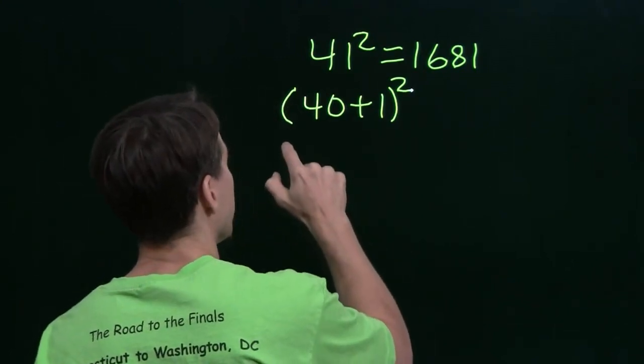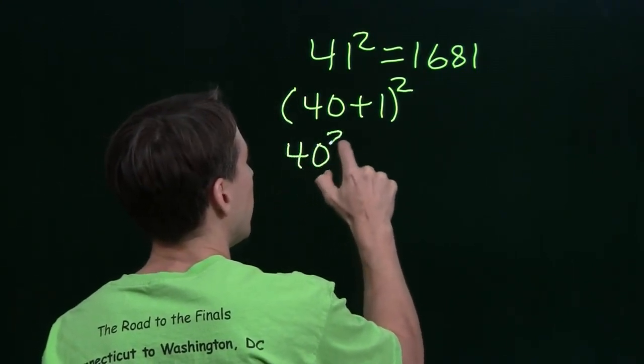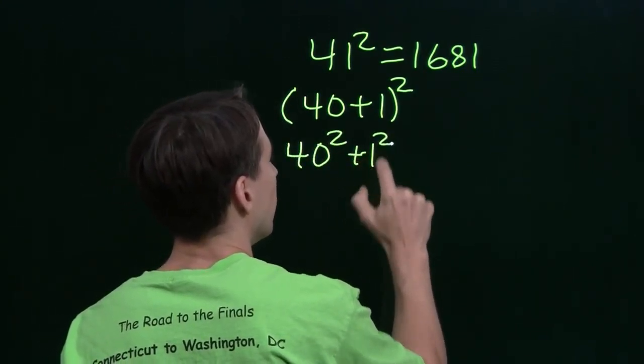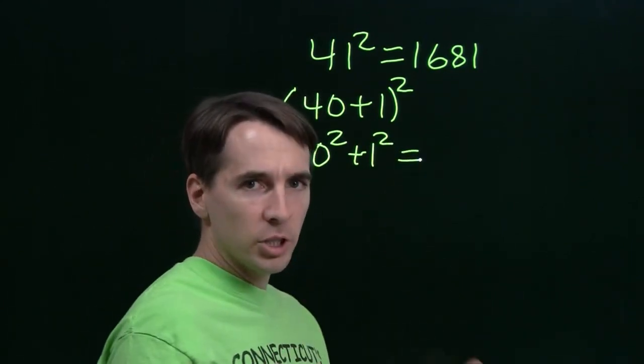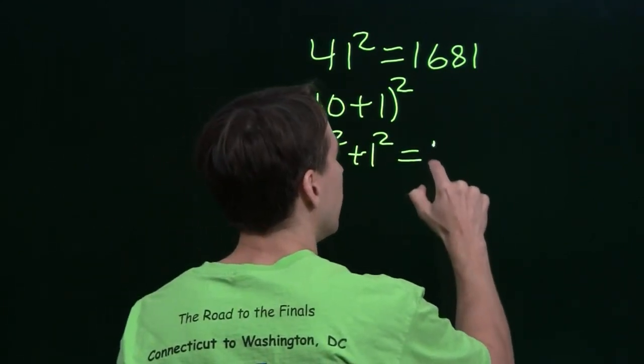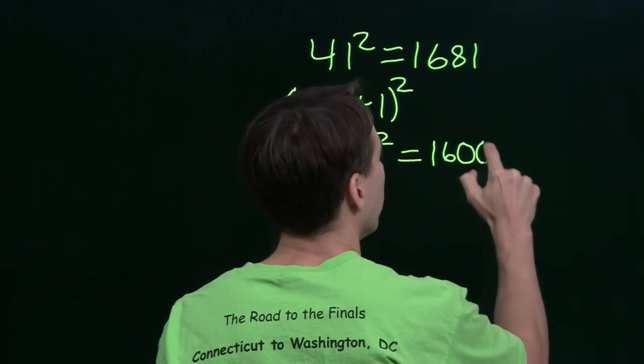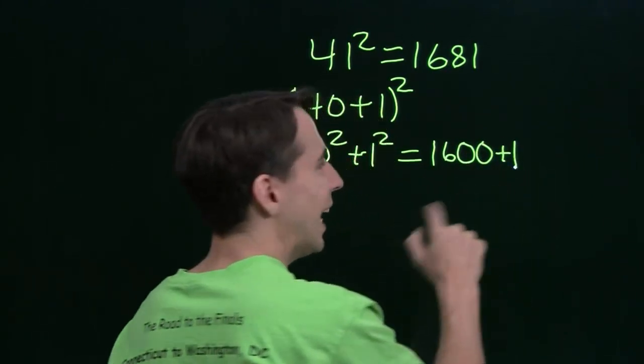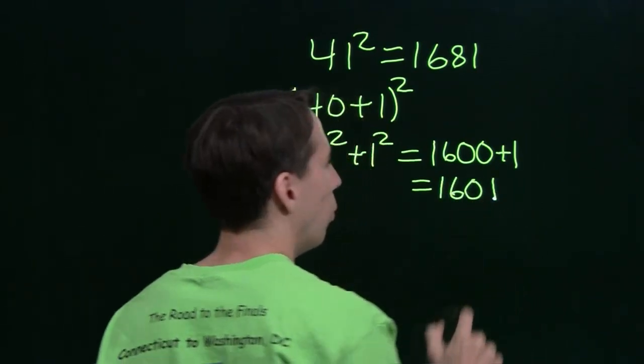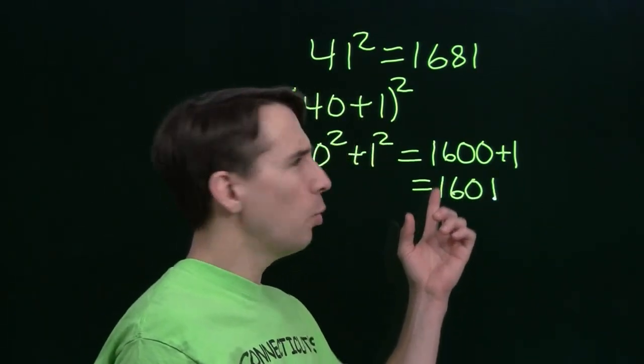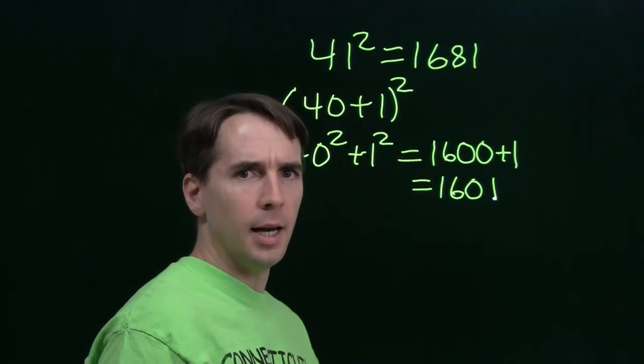Now, I'm guessing some of you tried this. You tried 40 squared plus 1 squared. Let's go ahead and compute this and see what that gives us. 40 squared is 1600, and of course, 1 squared is just 1. So when I add those two together, I get 1601. 1601 isn't the same as 1681,